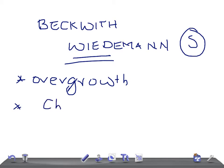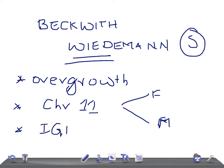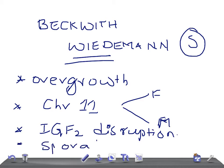Regarding genetics, there is a gene affected on chromosome 11. Chromosome 11 comes from both father and mother. If some genes are missing from the father or the mother, that results in Beckwith-Wiedemann Syndrome. There is a gene known as IGF2 — insulin growth factor 2 — which is disrupted, and that also causes Beckwith-Wiedemann Syndrome on chromosome 11. The syndrome is sporadic in nature.